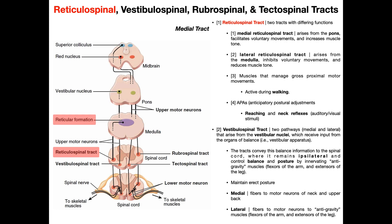In this video and the next, we're going to be talking about four descending motor pathways that go out to skeletal muscle: the reticulospinal, vestibulospinal, rubrospinal, and tectospinal tracts. The first two we're going to be talking about are both medial tracts — the reticulospinal tract and the vestibulospinal tract. So let's get going.